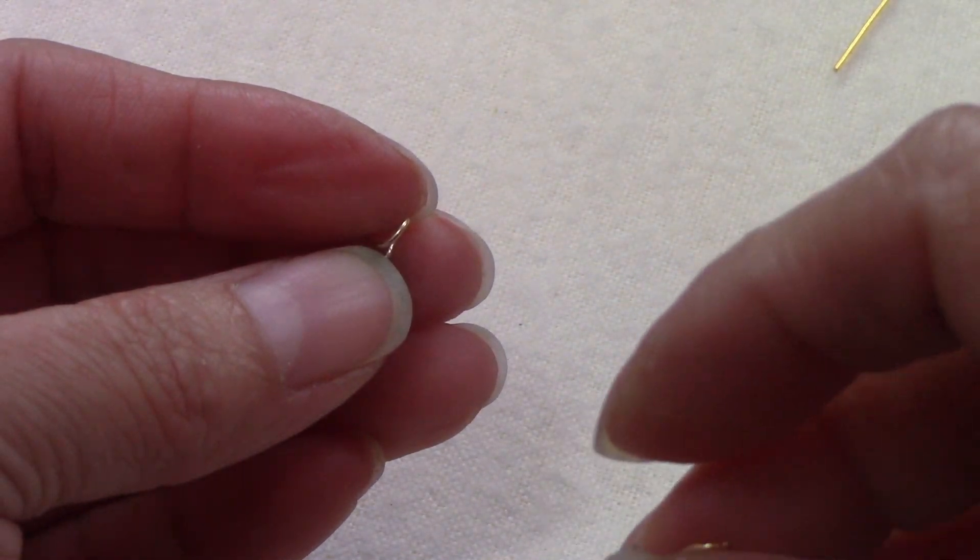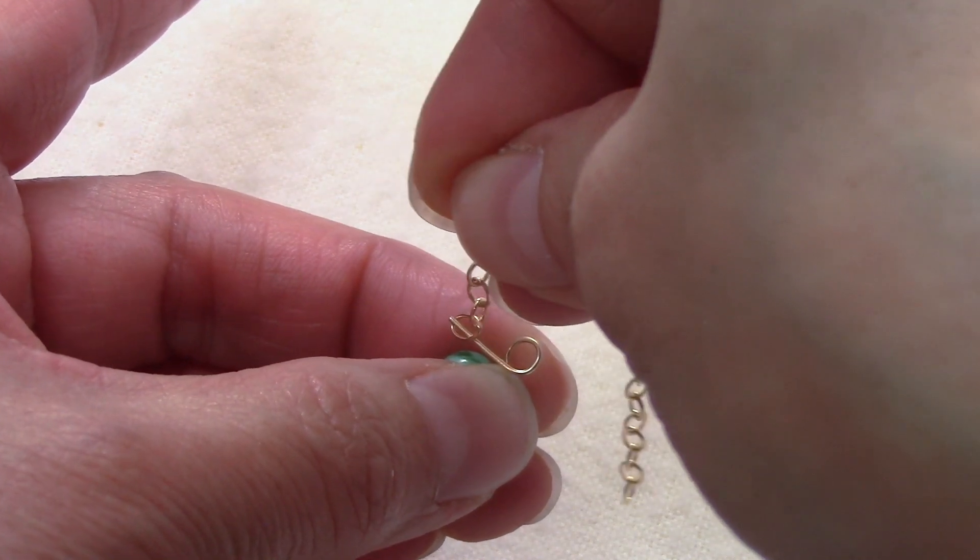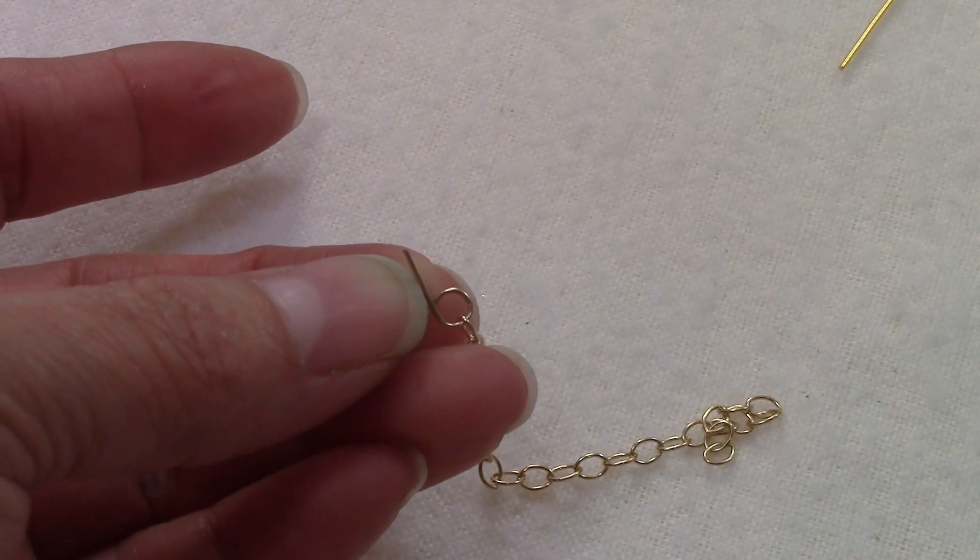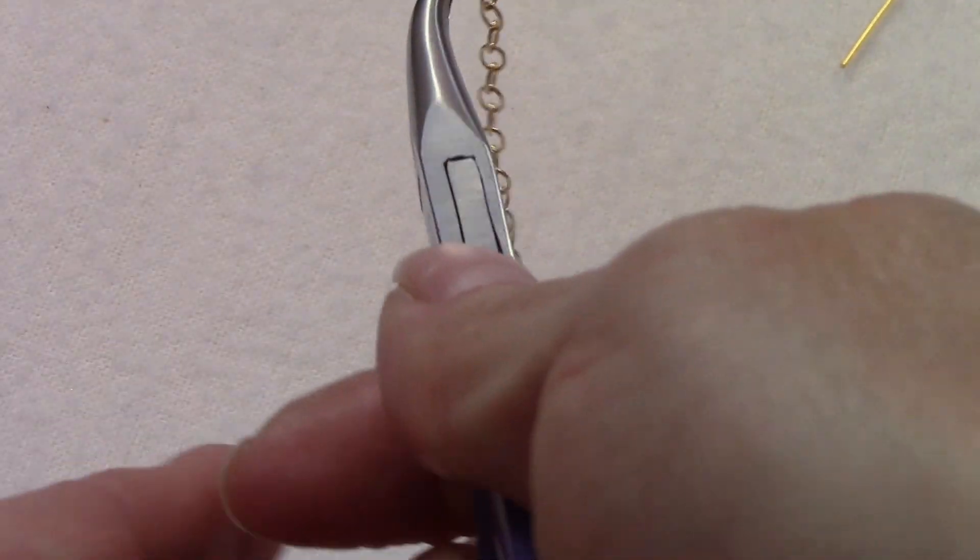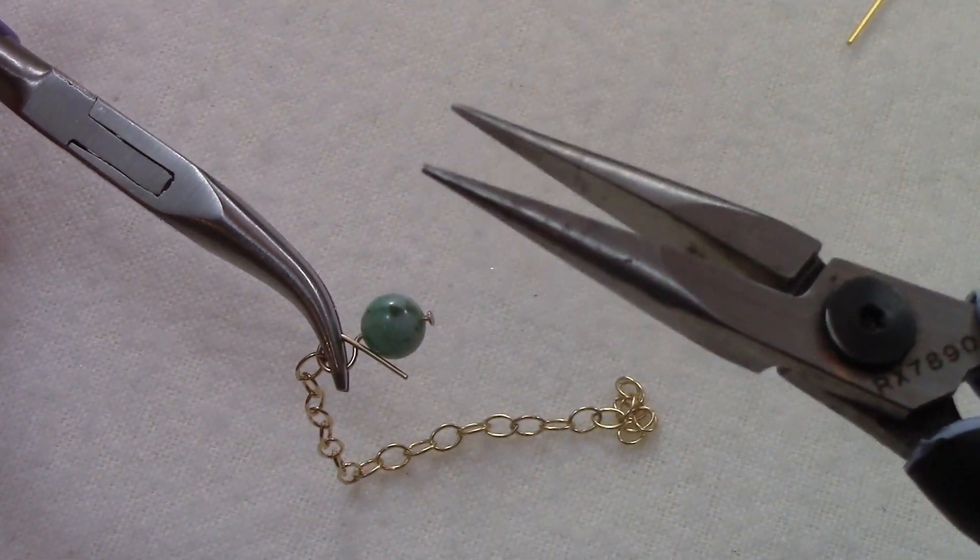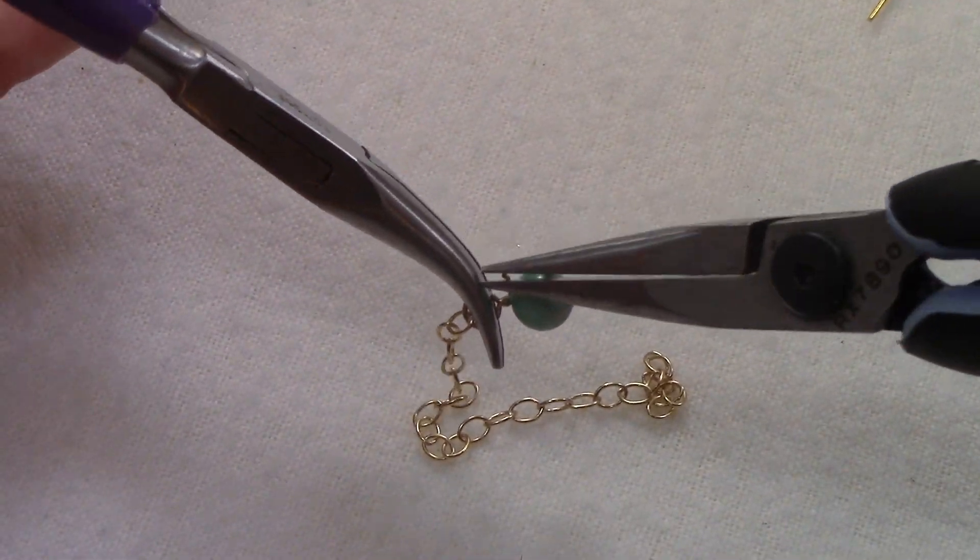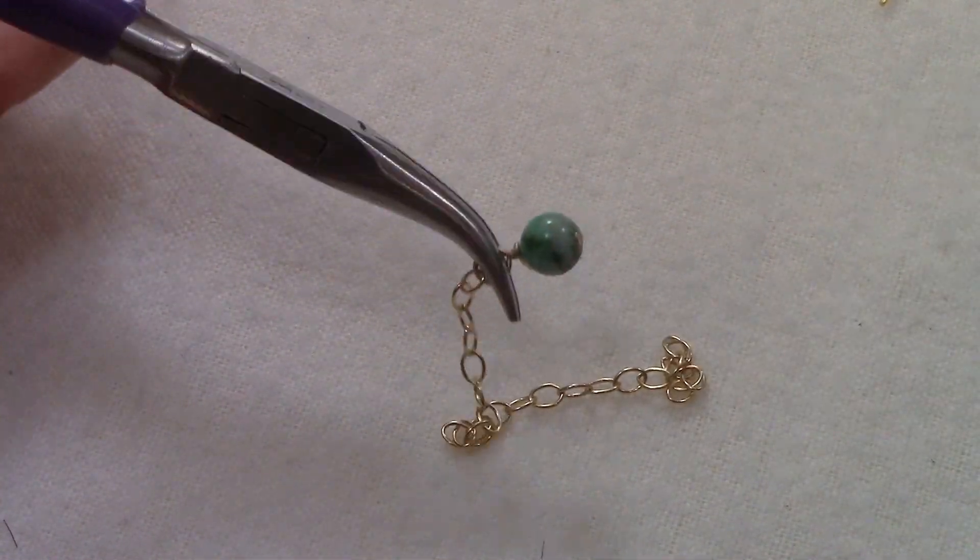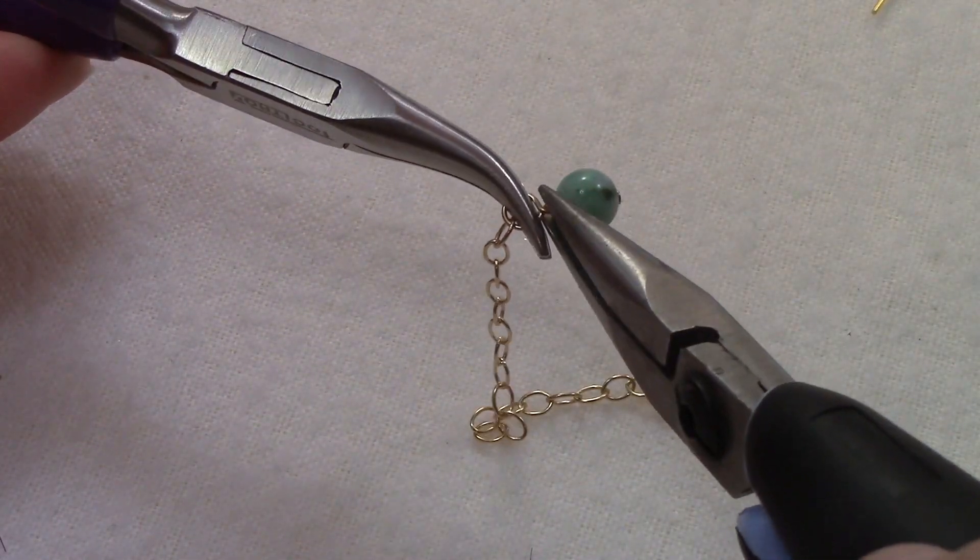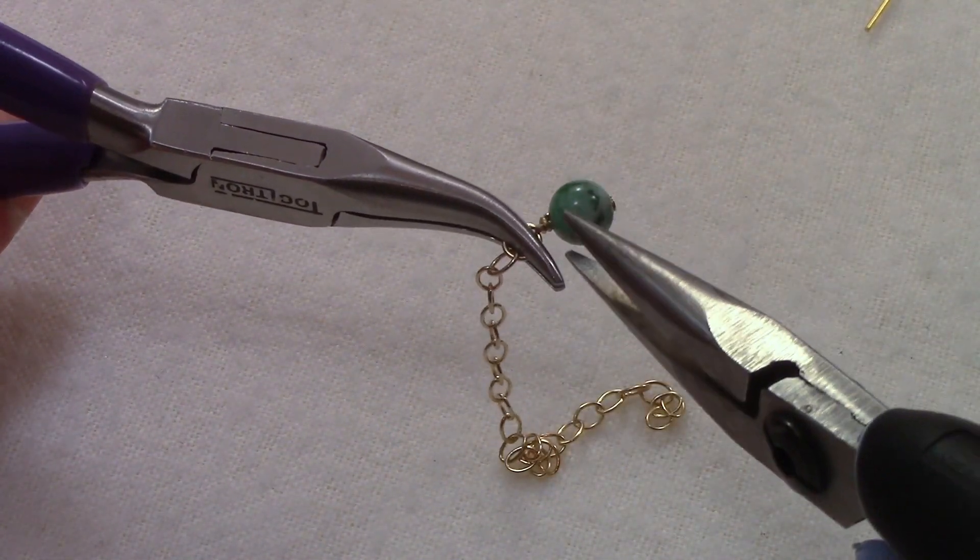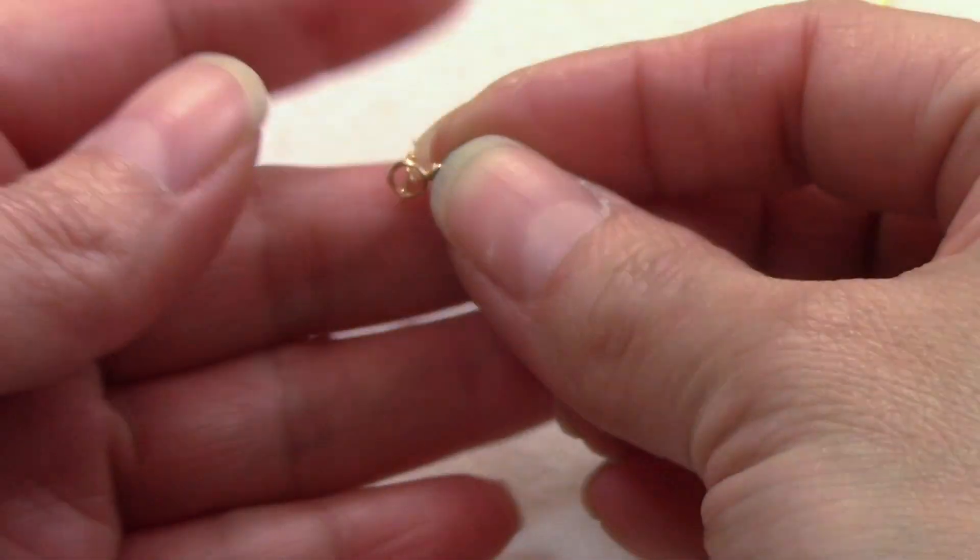You are going to grab one piece of chain and you are going to string it into the loop. With your bent nose pliers you are going to hold the loop. With your flat nose pliers you are going to wrap the rest of the wire. If you need to cut excess wire go ahead and cut it. My head pin is one inch long so I just have length for this so I don't need to cut any.